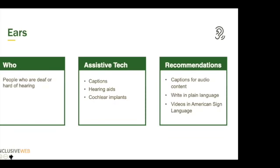Ears — that's folks who are deaf or hard of hearing. They might be using hearing aids, cochlear implants, or they might not be using anything at all. Recommendations for designing for folks who are deaf or hard of hearing: captions for audio or video content; writing in plain language, because some folks who are deaf have American Sign Language as their first language and the grammar is completely different from English; videos in American Sign Language as well; and if there are audio cues, they need to have some kind of visual cue as well.